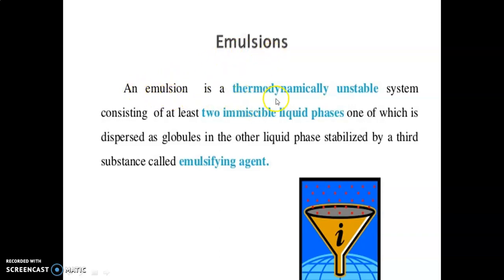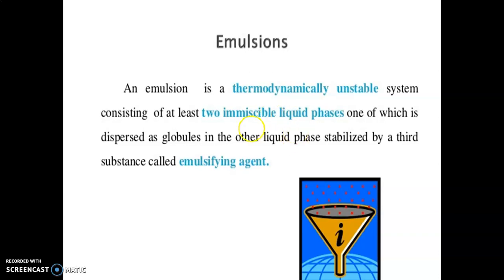An emulsion is a thermodynamically unstable system consisting of at least two immiscible liquid phases, one of which is the dispersed phase as globules, also called the internal phase, present in lesser concentration in the other liquid phase. The other liquid phase is also called the continuous phase or external phase, present in excess concentration compared to the dispersed globules. This system is stabilized by a third substance called the emulsifying agent.